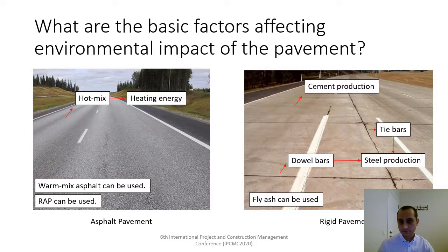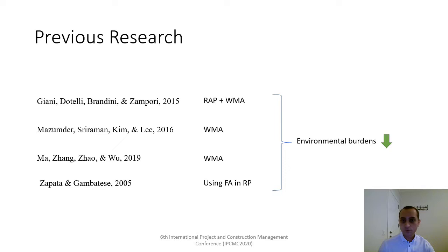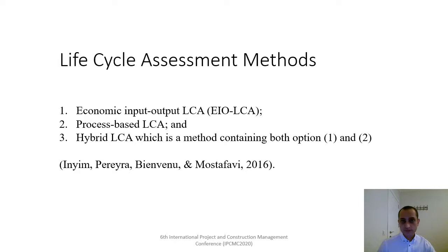These are some of the research suggesting that using RAP and warm mix asphalt in flexible pavements, and fly ash in rigid pavements, can reduce environmental burdens. In most recent studies, life cycle assessment of pavements has been carried out in three different ways: process-based LCA, economic input-output LCA, and hybrid LCA, which combines both methods. In this study, we use process-based life cycle assessment.